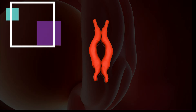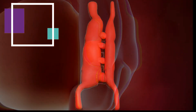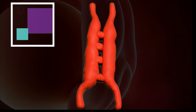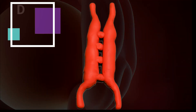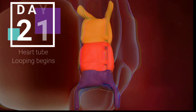At day 21, the embryo begins a process called lateral folding. The separate tubes now fuse, creating one single heart tube.